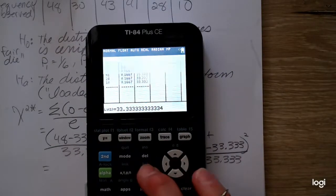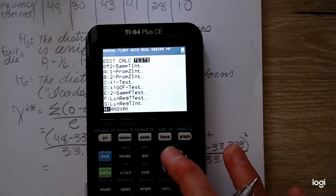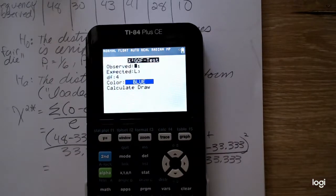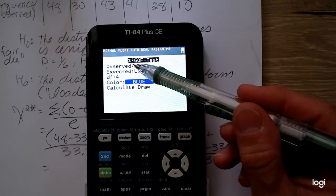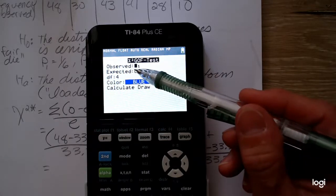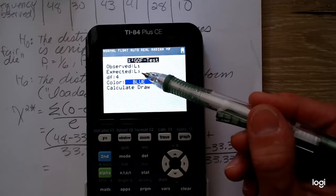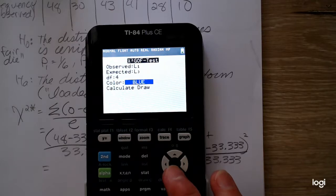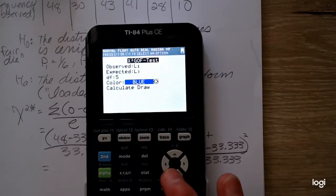So going to my stat menu, arrow over to tests. It's toward the bottom. You can scroll down or scroll up to the chi-square goodness-of-fit. And it's going to ask for where your observed counts are. I put those in list 1. And the expected counts are in list 3. If you need to change that, you can. It won't run the test correctly if you use the expected proportions. The degrees of freedom is the number of outcomes or number of categories minus 1. So for a six-sided die, that degrees of freedom would be 5. And then calculate.